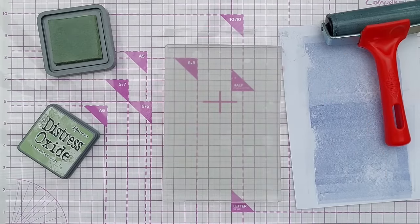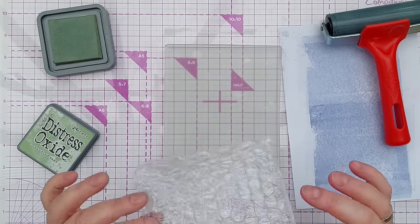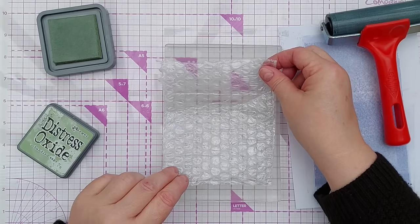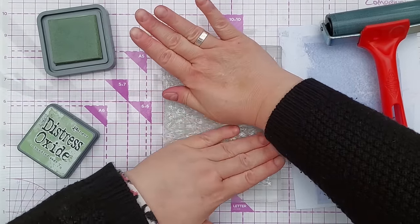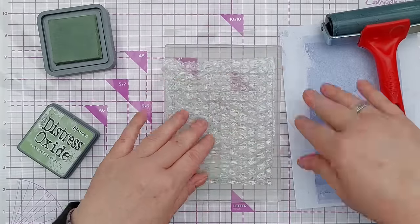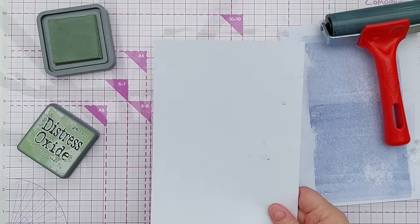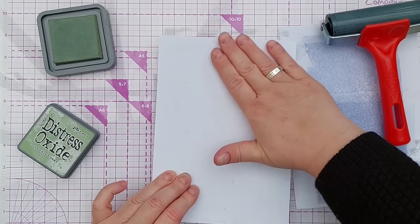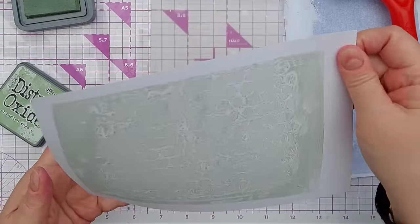Like that and now I've got some regular size bubble wrap, so small bubbles, and I can pop that on, press that down carefully again, lift that up, get another piece of paper and pull that print.